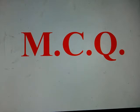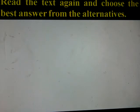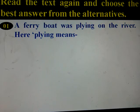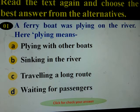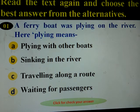Now we have some MCQ questions. Read the text again and choose the best answer from the alternatives. Question number one: 'A ferry boat was plying on the river' — here 'plying' means: (a) playing with other boats, (b) sinking in the river, (c) traveling along a route, or (d) waiting for passengers. The answer is: traveling along a route.